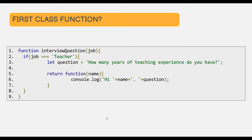In the same way, we can also return a function from within another function. Here in this example, we have the interviewQuestion function. From within this function, we are returning an anonymous function. This is possible because in JavaScript, functions are first class functions — they are just another value, and hence we can also return them from within a function.